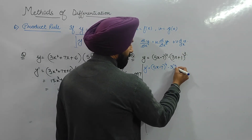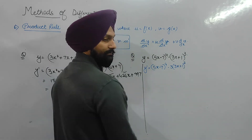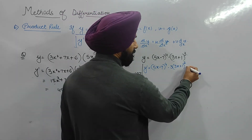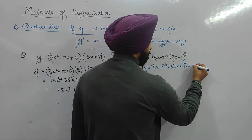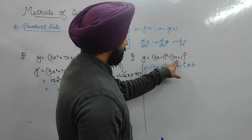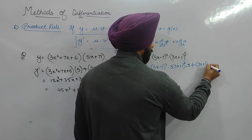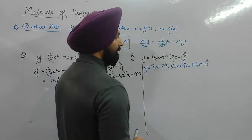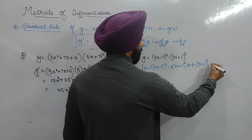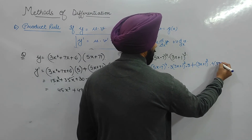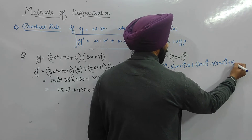Plus second function (3x + 1)³ into derivative of the first: using the extended power rule, bring down 4, giving 4(5x − 7)³ · 5. So the derivative has two terms involving these powers.